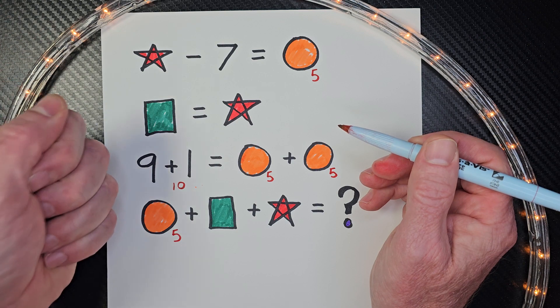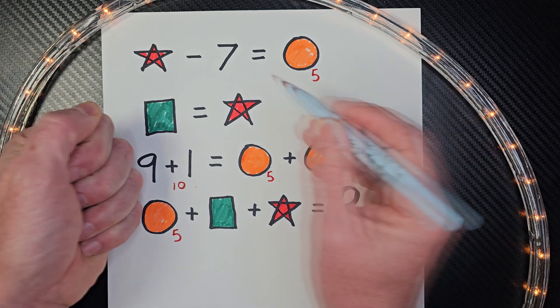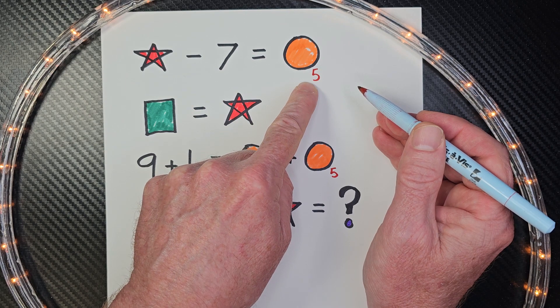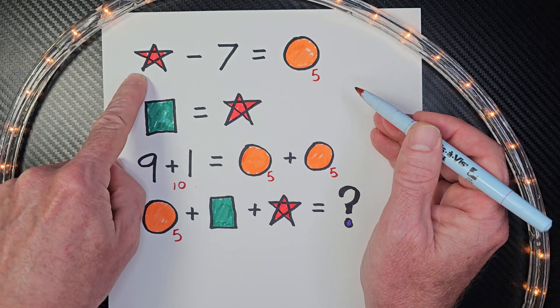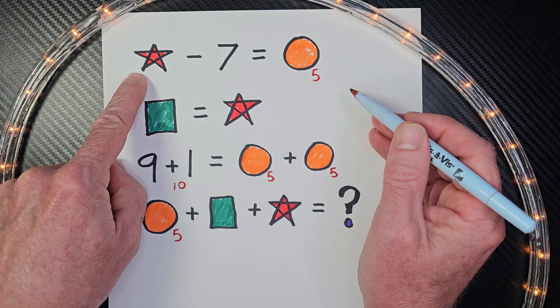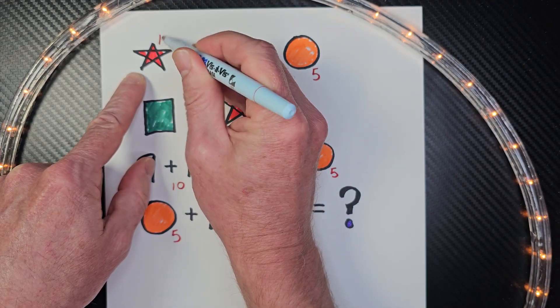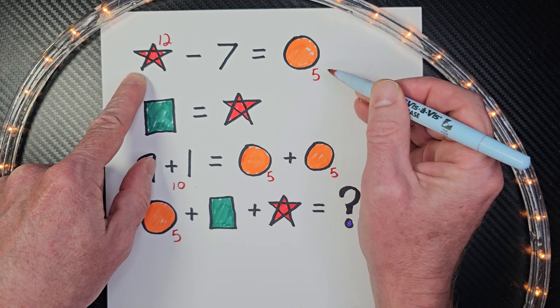What number do you think would be here? Yeah, that would be 12. So 12 minus 7 would equal 5. 7, 8, 9, 10, 11, 12.